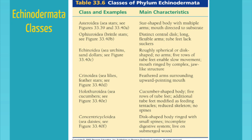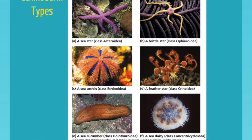Sea stars are gross — they stick out their stomach and digest externally. Sand dollars are another member of this group. Sea cucumbers are disgusting: if scared, they'll rupture their body and spill out their organs so the predator eats the organs while they regenerate new ones. The sand dollars you're most familiar with have had their fleshy exterior removed when they died, leaving that calciferous endoskeleton behind, which you can collect. And of course you know all about sea stars — starfish.